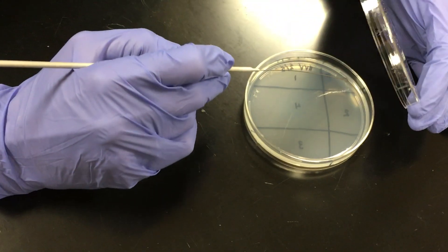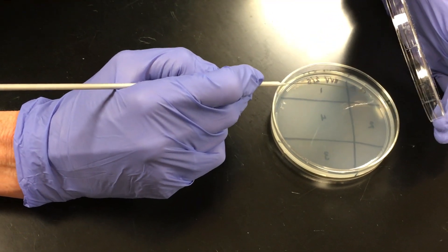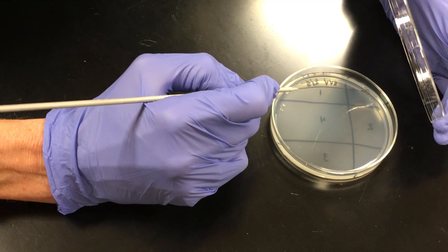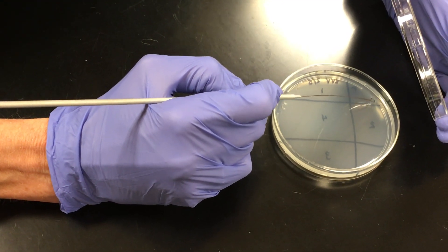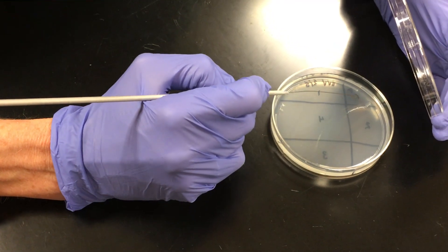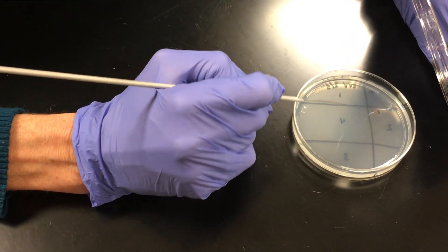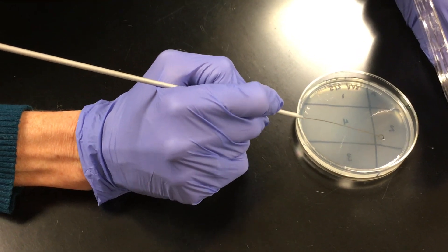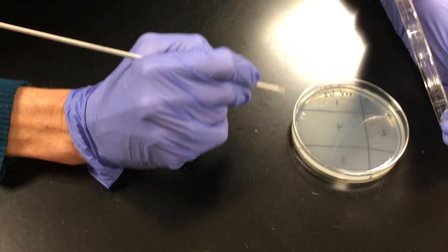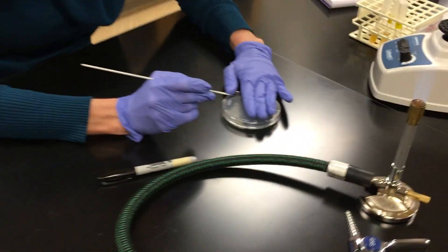Now what I want to do is I want to spread the bacteria over here from quadrant one across quadrant two. So I'm going to put my loop down. And I'm just going to gently streak one, two, three, four, five. And notice I never crossed into any of the other quadrants. I didn't cross over my lines. And then you close your plate.